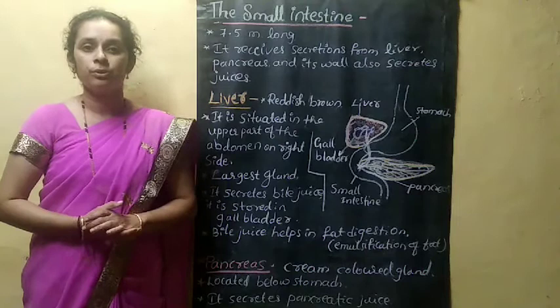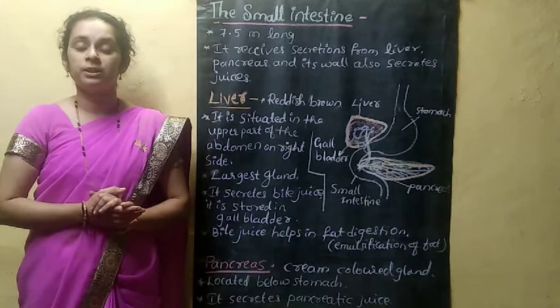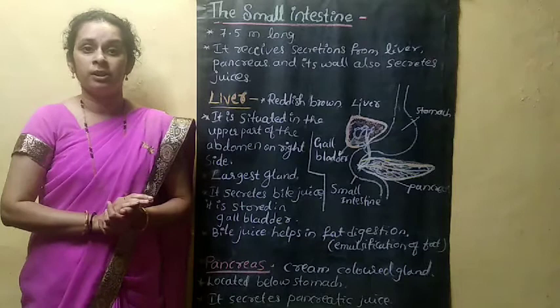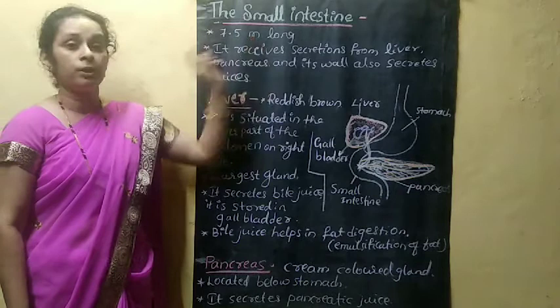Good morning children. In the last class we studied about digestion in the stomach. In today's class we will discuss about digestion in the small intestine. The small intestine is a highly coiled tubular structure and it is about 7.5 meters long.